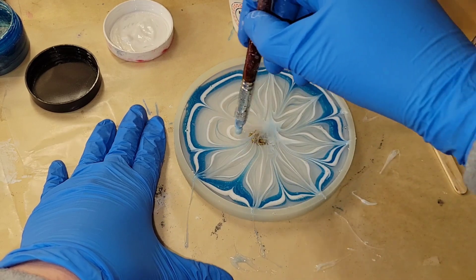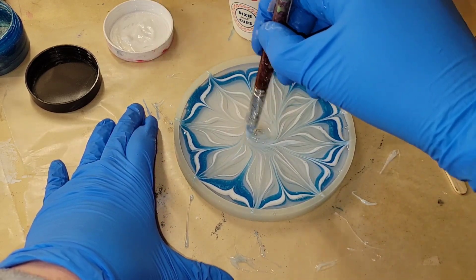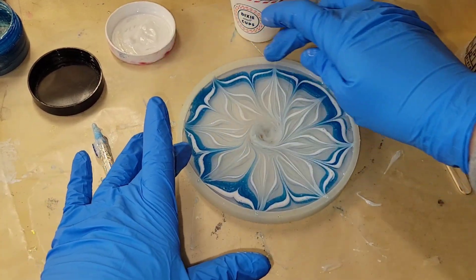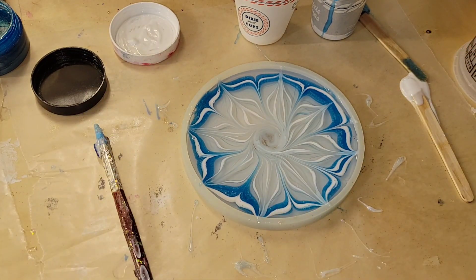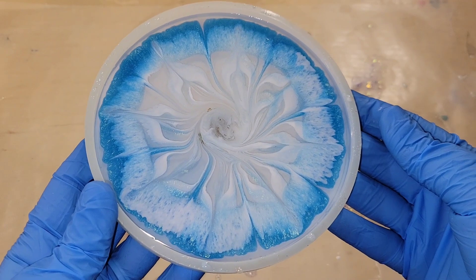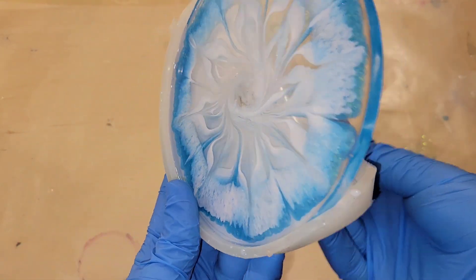My resin was already nice and thick, so I just went in and did my flower petals right after I poured. That's it. I'm going to take my gloved hand and go around the rim of the mold to clean up any little resin that may have gone out. Let it dry overnight, and here we are, ready to demold it.